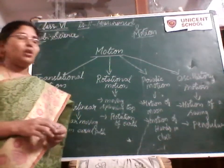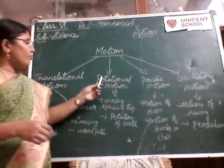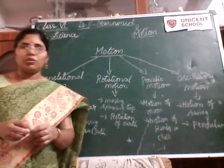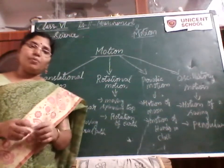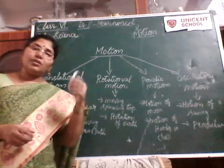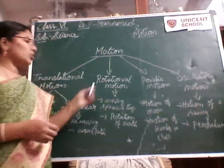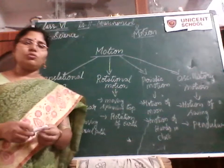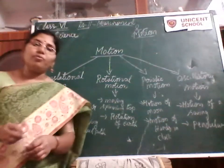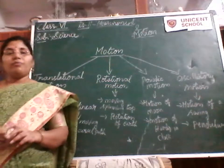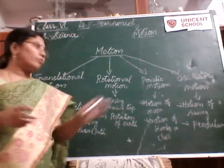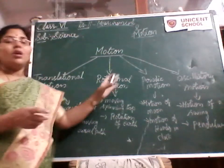Don't think that every object will have only one kind of motion. The same object can show two or three kinds of motions based upon the situation. Let us discuss about objects which show a combination of two or three motions.